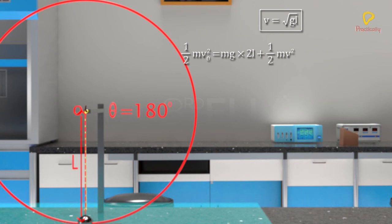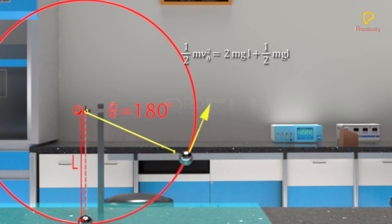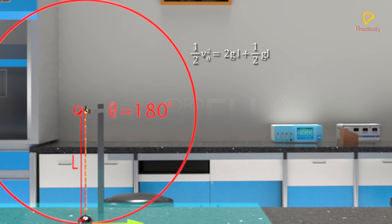Substituting velocity at the highest point as root over gl, we get half Mv not square equal to 2 MgL plus half MgL. Upon cancelling M on both sides and solving, we get v not equal to root over 5 gl.